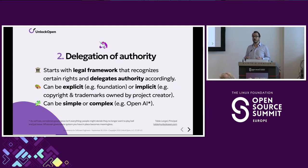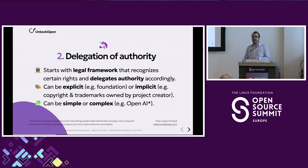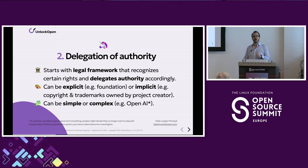Just as talking about money in open source is important, I think talking about how authority is delegated from a legal system to an open source project and its maintainers is also important. Governance can be explicit or implicit — you can have a board that owns the trademark to your project, but it can be entirely implicit. Someone owns the trademark and you can't just do whatever you want with it. Governance can be really simple or incredibly complex — like OpenAI's governance model. And as we'll see, governance itself is not the only thing that matters; sometimes people can just decide to leave.